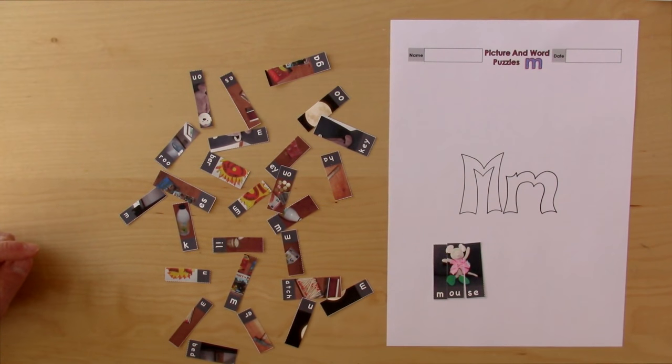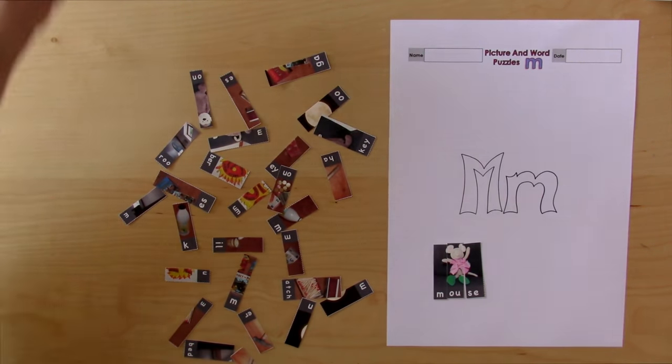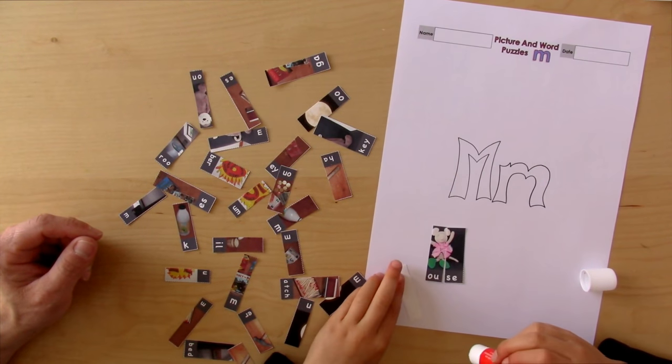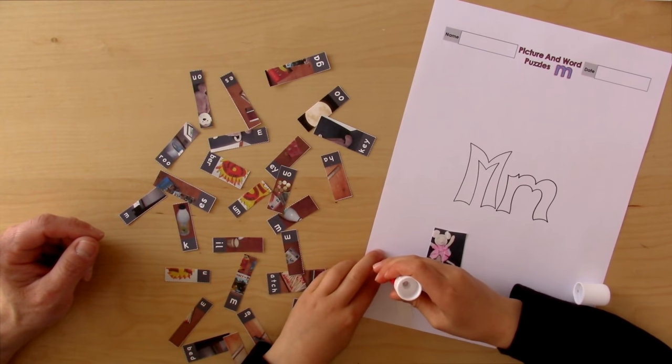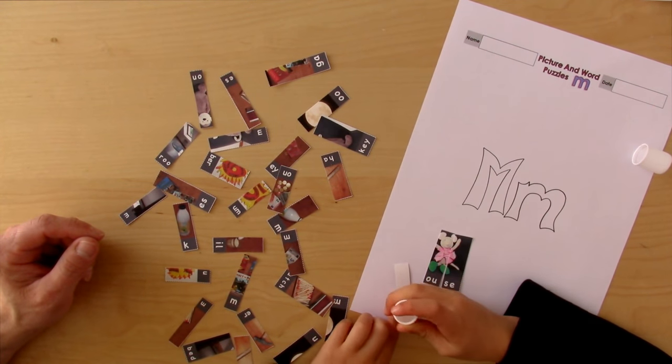And what is that a picture of? A mouse. Mouse. How would we say mouse in French? Souris. Okay, lovely. Do you want to stick it down? It's not the same letters, eh? No, they aren't. There's not an M. There isn't an M. You're right. There's an S instead of the M.